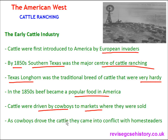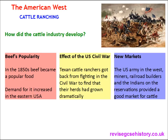As cowboys drove their cattle they came into conflict with the homesteaders, and we're going to be looking at this more in a later video. So, how did the cattle industry develop? Firstly, beef's popularity: in the 1850s beef became a popular food and demand for it increased in the eastern United States of America.